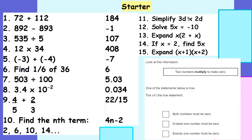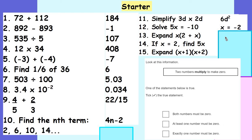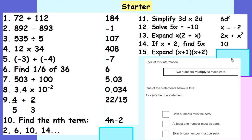Looking at my algebra questions: 3d times 2d gives me 6d squared. If 5x is negative 10, x must be negative 2. Expanding that bracket gives me 2x plus x squared. If x is 2, 5x is 5 times 2, which is 10. And if you expand that bracket you get x squared plus 3x plus 2.